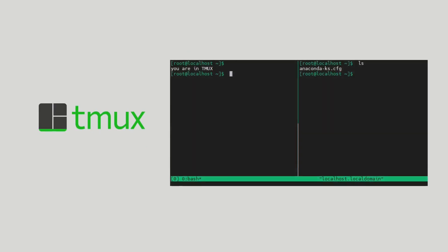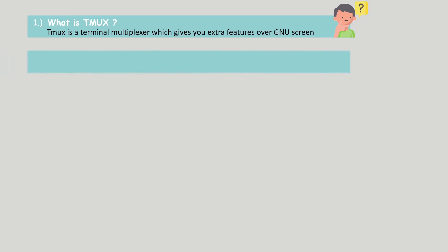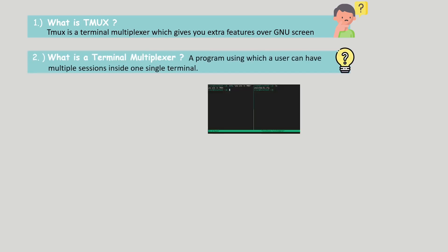In this video I will show you what tmux is and how to use it, along with some real life use cases. Tmux is a terminal multiplexer — it lets you switch easily between several programs inside a single terminal. You can detach and reattach sessions, and these detached sessions keep running in the background. For those who don't know what a terminal multiplexer is, it is a program using which a user can have multiple sessions inside one single terminal.